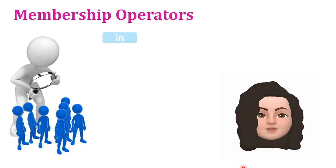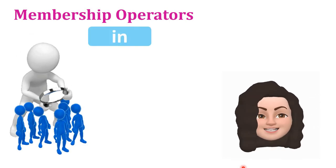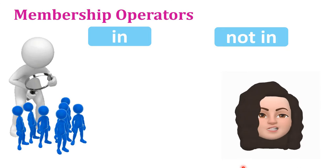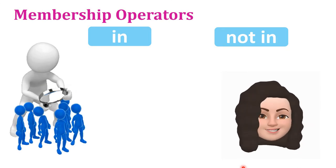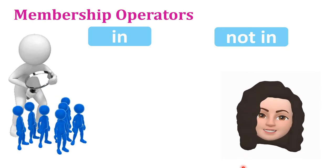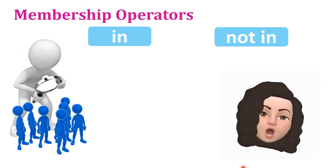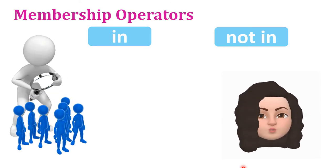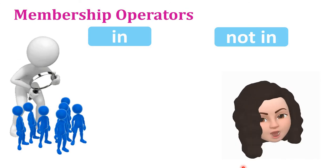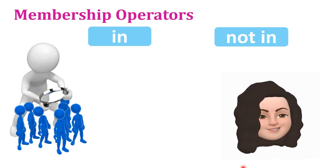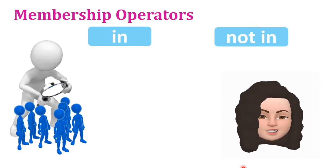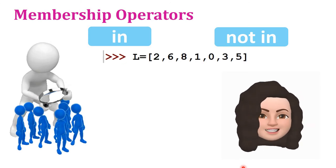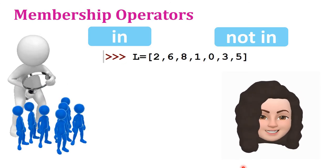Membership operators in a list are 'in' and 'not in'. The 'in' operator returns true if a particular element is present in the list, otherwise it returns false. The 'not in' operator returns true if the search element is not present in the list, otherwise it returns false. Let's look at an example: L is equal to [2, 6, 8, 1, 0, 3, 5].